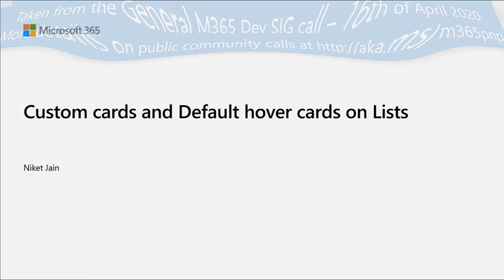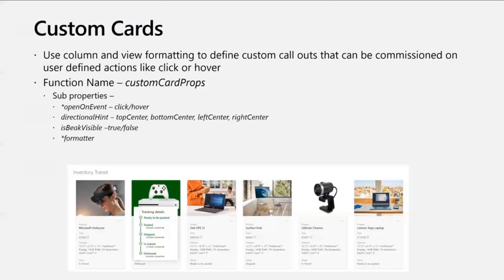This is driven by formatters. What I'll be talking about today: first, custom cards. Custom cards can be applied to both column and view formatting. It's basically there to define custom callouts. It can be triggered on the basis of two kinds of user-defined actions — click or hover. The function name is custom card props. There are certain sub-properties which are mandatory, and certain ones which are optional.